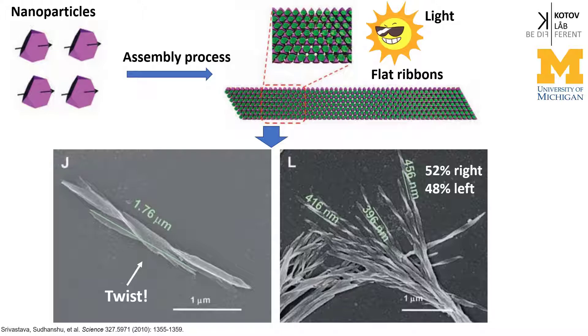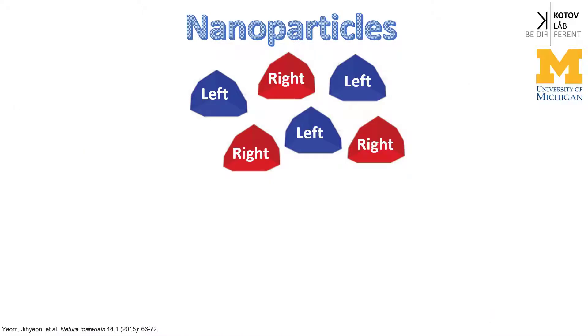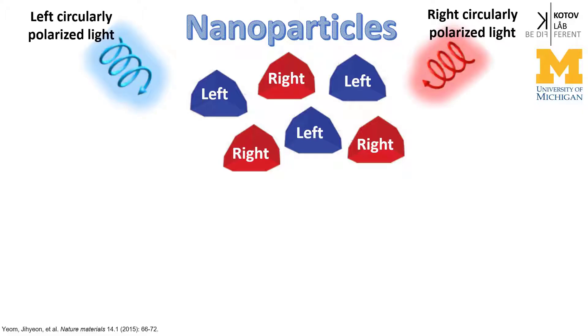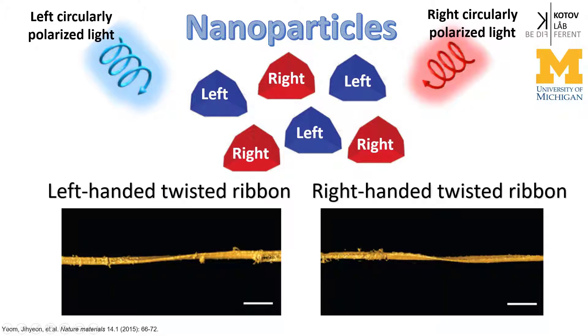But light could also be chiral. Physicists call it left and right circular polarized light. And if you take a mixture of 50% left-handed and 50% right-handed nanoparticles and illuminate it with left and right light, you will get left and right-handed twisted nanoribbons respectively. The ability of nanoparticles to retain the information of incident light could allow a better understanding of the origin of biomolecular homochirality.